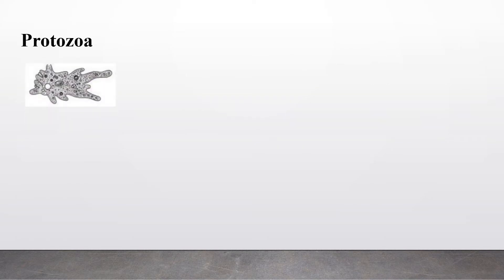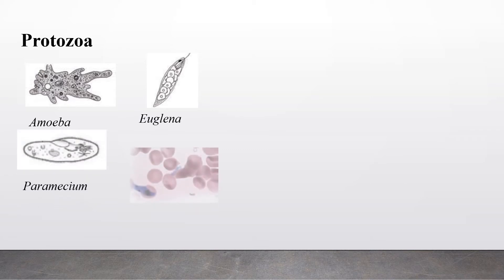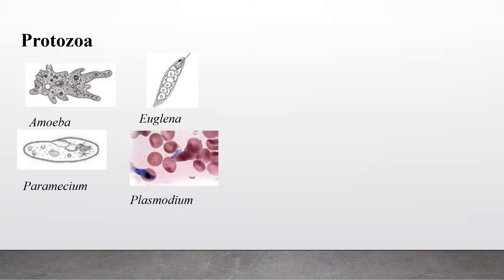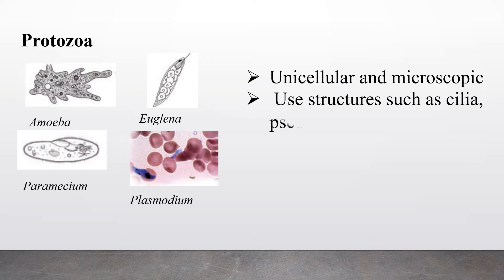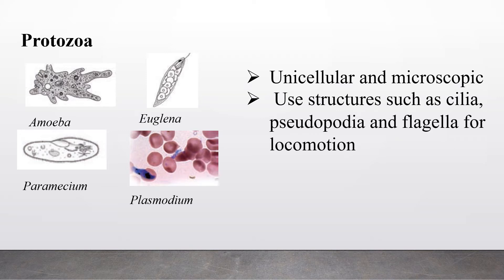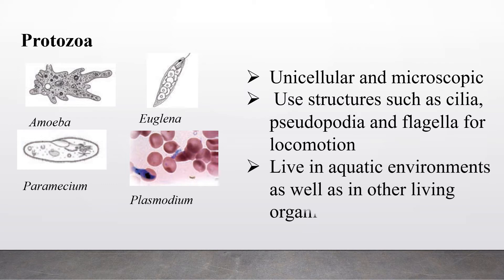The next topic is protozoa. In this picture you can observe a type of protozoa named amoeba, and also euglena, paramecium and plasmodium. These protozoa are unicellular and microscopic, and they have structures for locomotion. Amoeba have pseudopodia, euglena have flagella, and paramecium have cilia for locomotion. They can live in aquatic environments as well as within organisms.